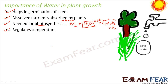Fourth, water regulates temperature in plants. It prevents the plant from becoming very hot, keeps the plant cool, and protects it from hot air currents. If the temperature becomes too hot for a plant, it might get dried up, and dehydration can lead to the death of the plant. So water controls the temperature within the plant.